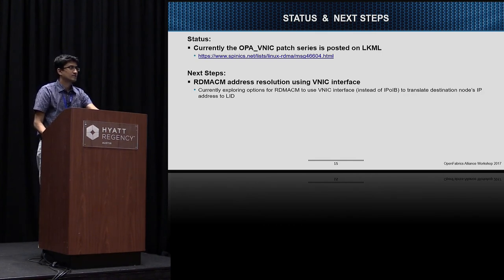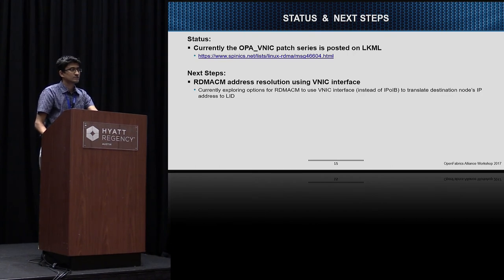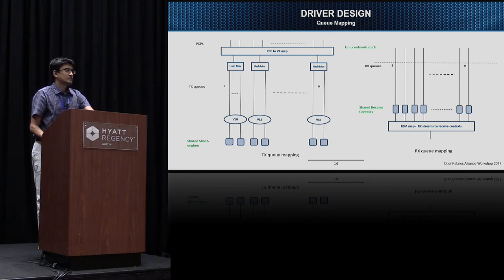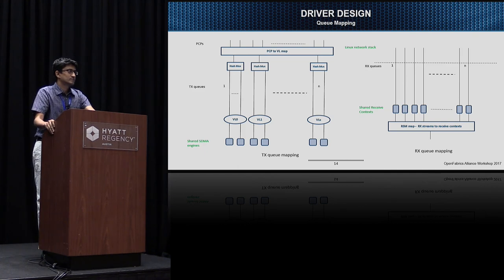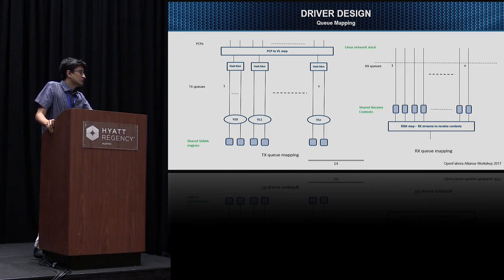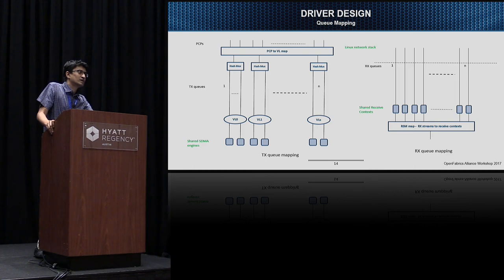Question from audience: On the receive processing side, did you say all VNIC instances on that host would share the queues? Answer: That's correct. Question: Would an individual VNIC in a way be presented with RSS? Answer: We have a bunch of receive contexts, and those contexts are used by all the virtual NICs on the host. TCP streams are diverted to one of the contexts, and in software we provide demultiplexing and queuing for the individual virtual NICs.